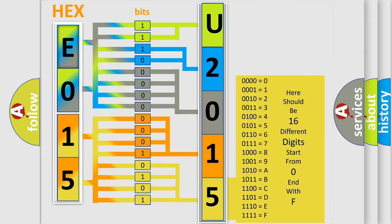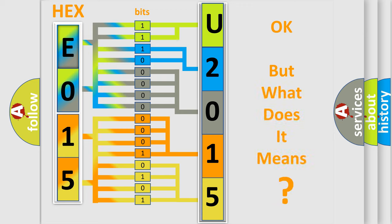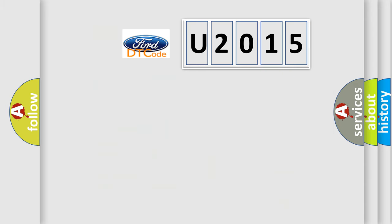We now know in what way the diagnostic tool translates the received information into a more comprehensible format. The number itself does not make sense to us if we cannot assign information about what it actually expresses. So, what does the diagnostic trouble code U2015 interpret specifically for Infiniti car manufacturers?